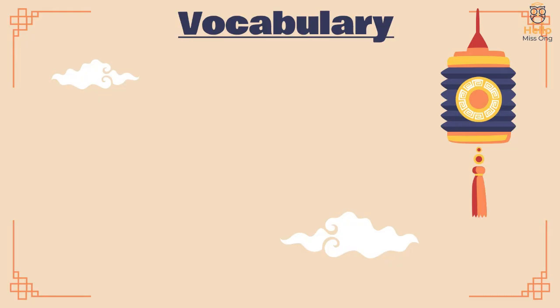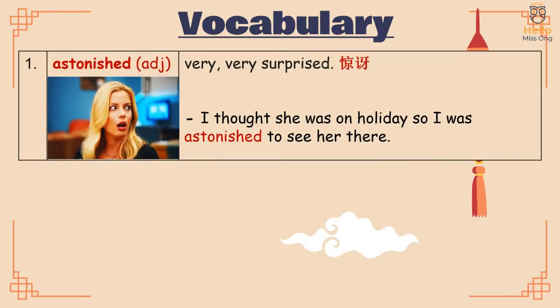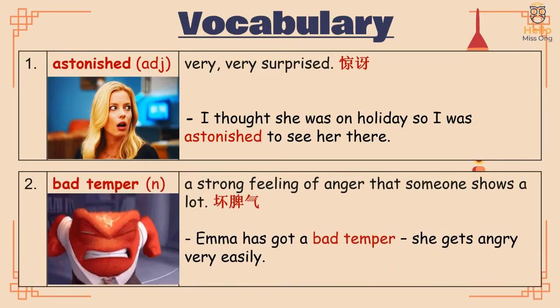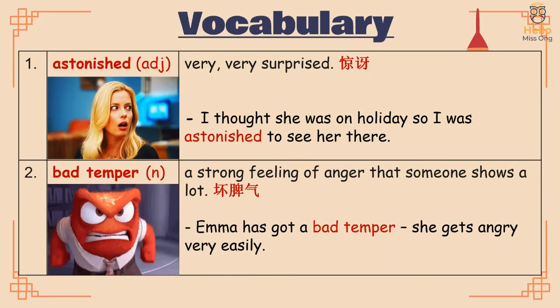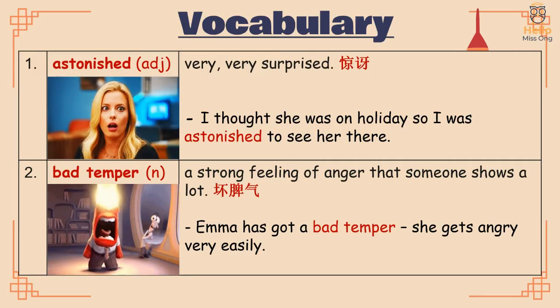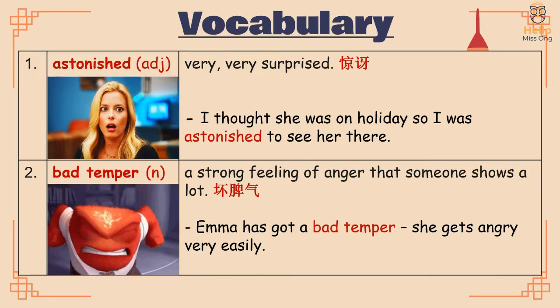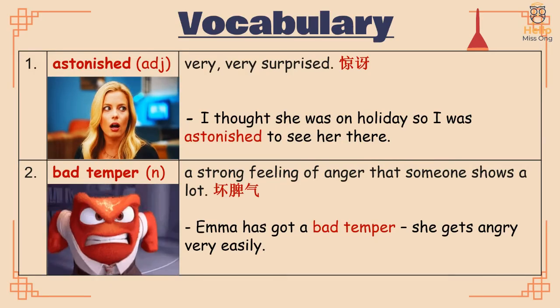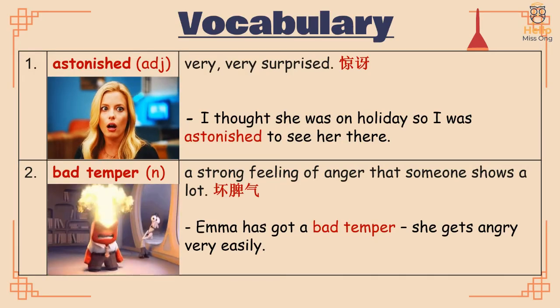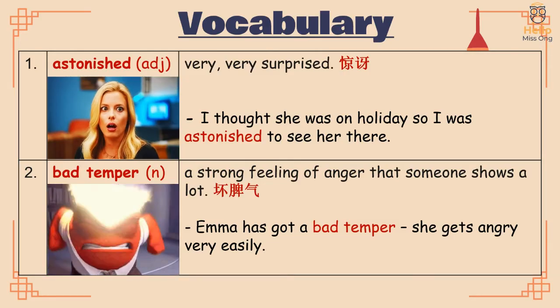Let's learn the vocabulary. Astonished: very, very surprised. Example: "I thought she was on holiday, so I was astonished to see her there." Bad temper: a strong feeling of anger that someone shows a lot. Example: "Emma has got a bad temper — she gets angry very easily."